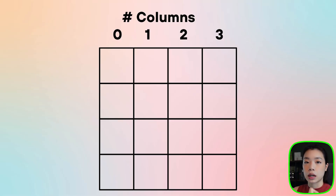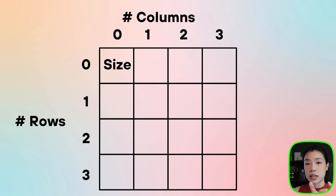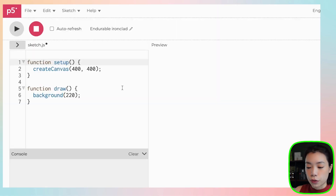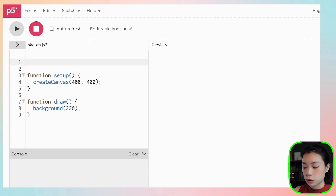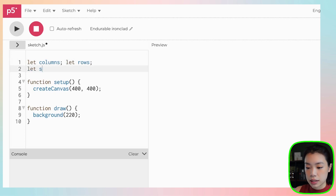To draw a grid, you need to identify three things. First, the number of columns that you want to draw. Second, the number of rows that you want to draw. And then the third is the size of the square or the circle that you want to draw. So first, let's create three variables: let columns, let rows, and let size.